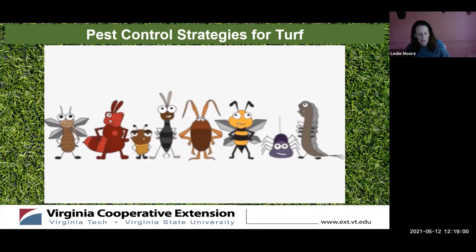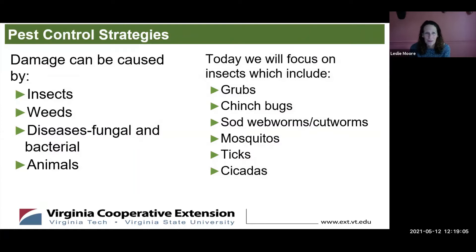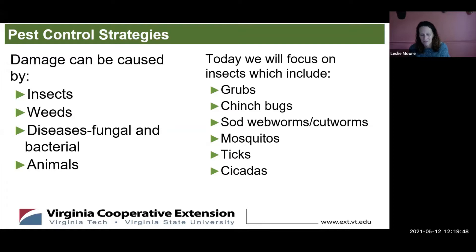There are many pests that will take over the garden and your lawn, and these include insects, weeds, diseases — which include fungal and bacterial diseases — and animals. Today we're going to focus mainly on insects, including grubs which feed under your turf, and chinch bugs, sod webworms, and cutworms which feed above ground. We'll also briefly discuss mosquitoes, ticks, and cicadas, which don't really affect your yard but are in your yard, and we want to help you control them.